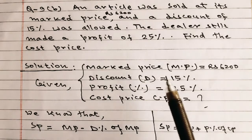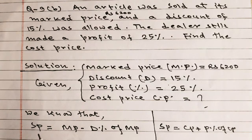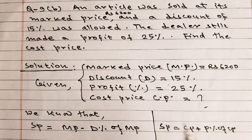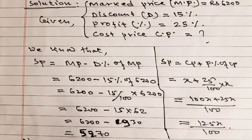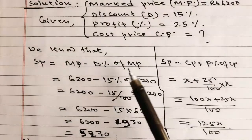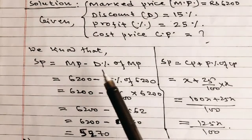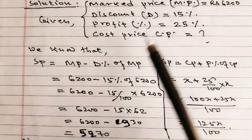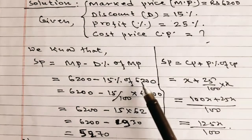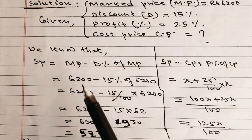We know that when a discount is given, the formula for selling price is: SP = MP − (discount% of MP). When profit is given, the formula is: SP = CP + (profit% of CP). By combining both formulas, we can find the value of CP. SP = MP − discount% of MP = 6200 − 15% of 6200.